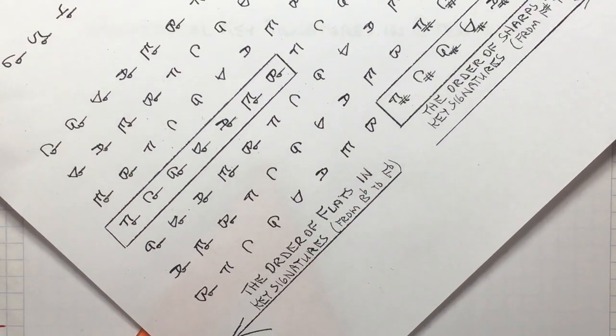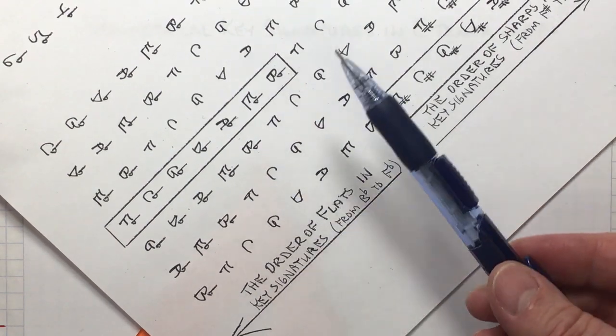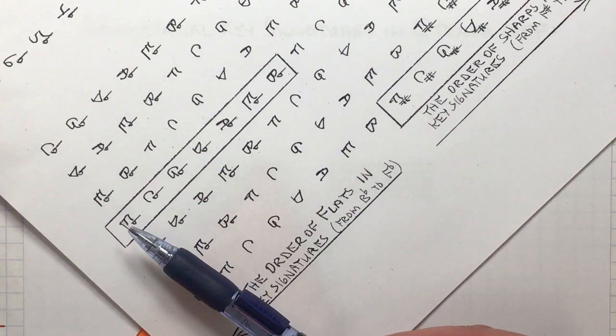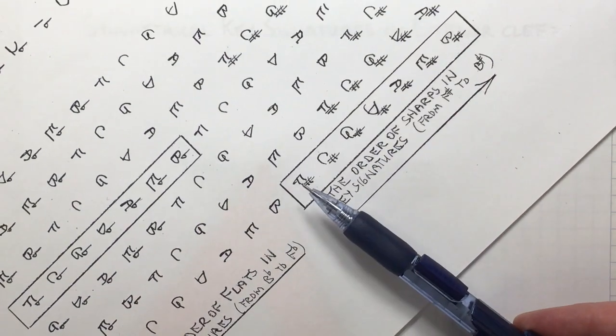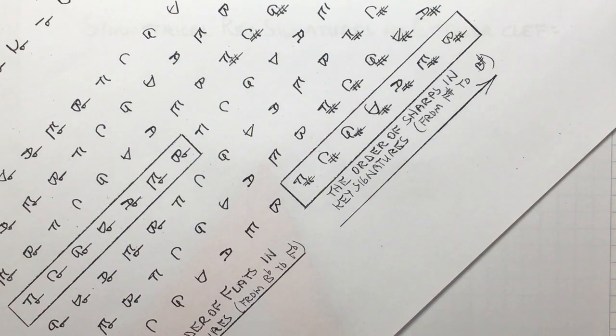Notice the order of flats is the same as the order of sharps backwards: B-flat through F-flat, which backwards is F-sharp through B-sharp. The order of sharps is the same as the order of flats backwards.